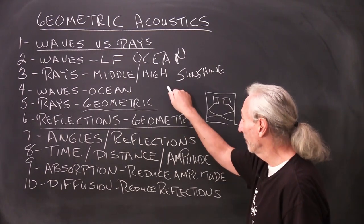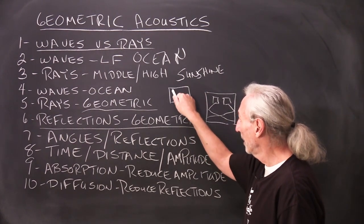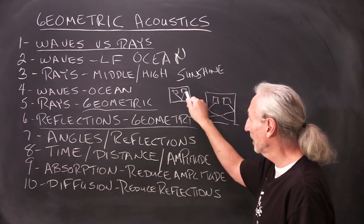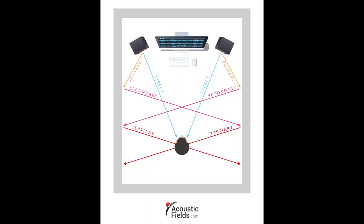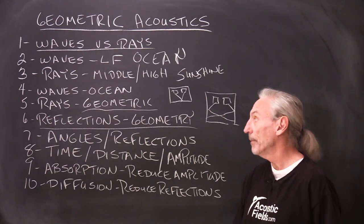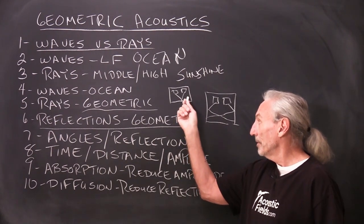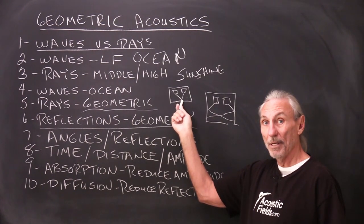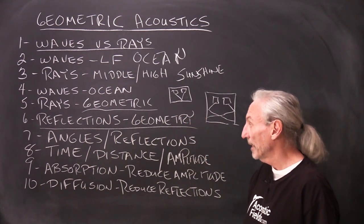Remember we have that direct versus reflected energy. The direct energy is the purest energy because it doesn't contain any reflections from the room. That's really what we want to hear most of, but we are sitting in a room. So we're bombarded with room sound which is the reflections from the room. So our goal then is to reduce the strength of those reflections so we get a good balance between the direct and the reflected energy.